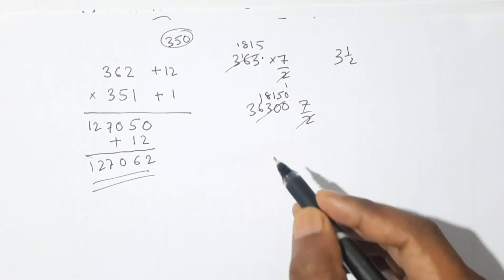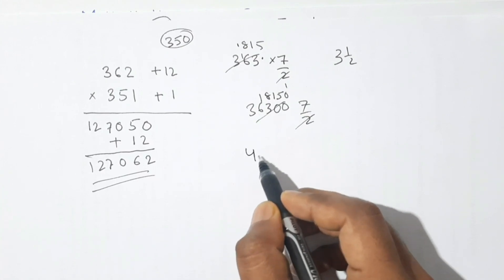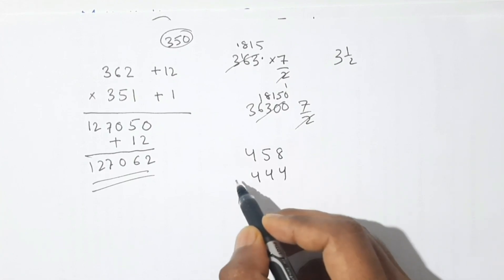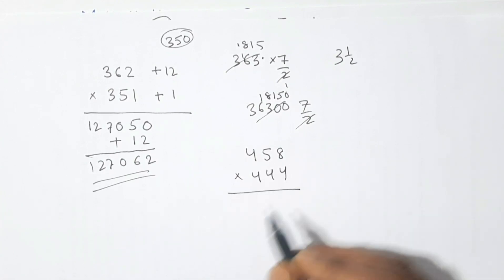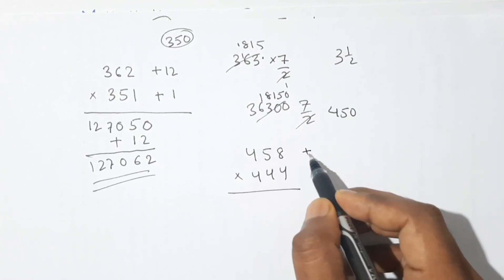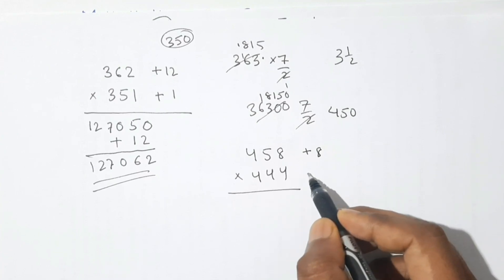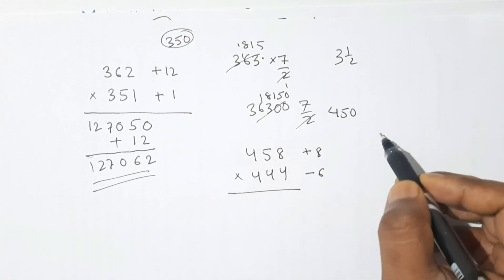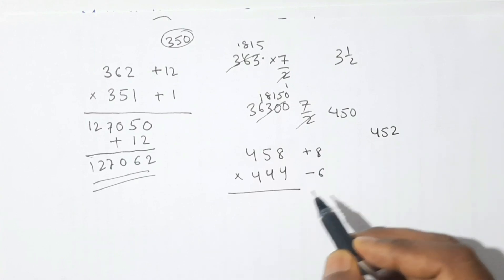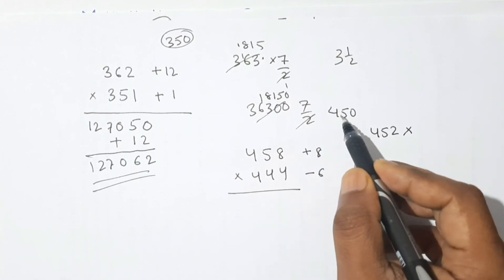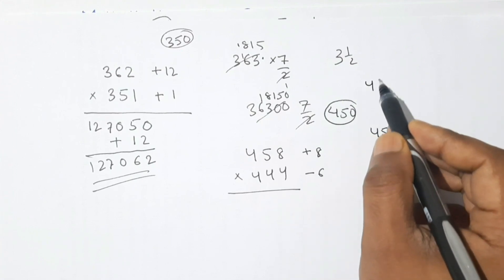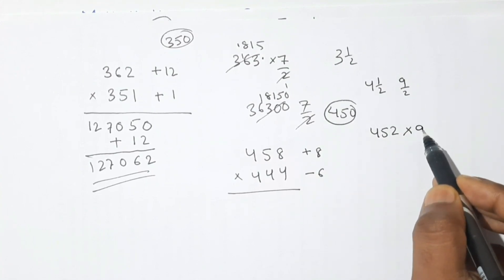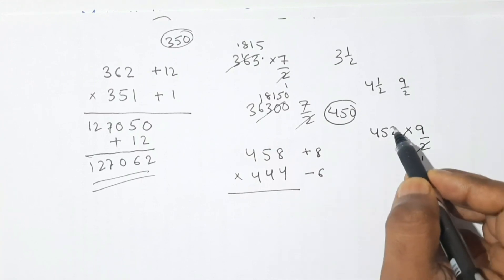Now I will take 458 and 444. Both numbers are nearer to 450, so our base is 450. 458 is 8 more than 450 (plus 8) and 444 is 6 less than 450 (minus 6). So 458 minus 6 is 452. Now, 450 is 4 and a half times 100, which as an improper fraction is 9/2. We multiply 452 by 9/2.